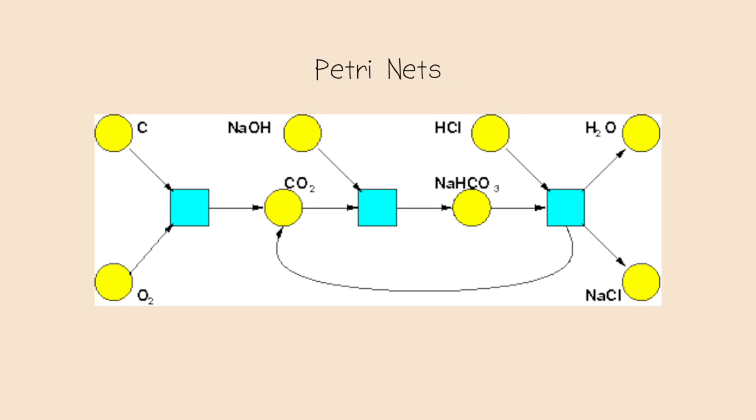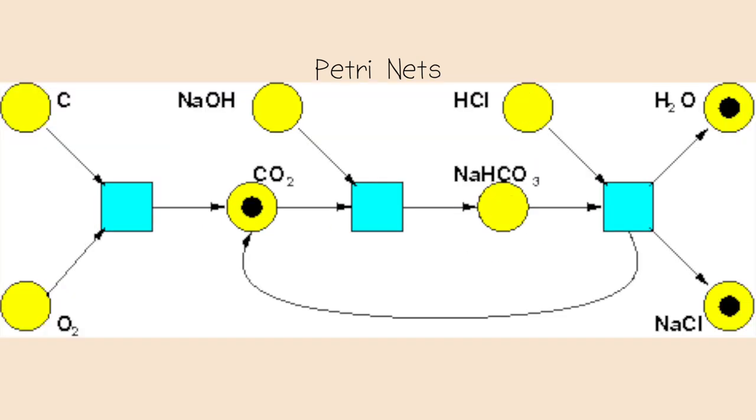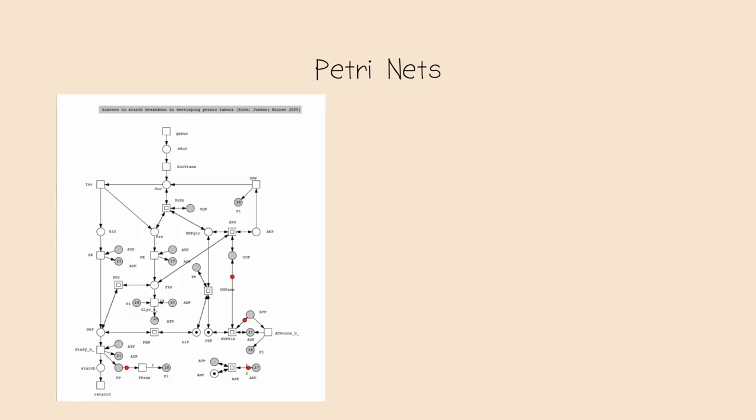Petri nets consist of circles and squares, where the circles in this case indicate a molecule and squares indicate a possible reaction. Adding a dot in the circle indicates a single element of the respective molecule. If the incoming edges of a square in a Petri net all have a molecule, the reaction can happen and the dots are transformed into a carbon dioxide molecule in this case. Because of this reaction, a new square is ready and can perform its reaction, which is then again transformed into water, natrium chloride and carbon dioxide. The carbon dioxide is fed back into the reaction again.